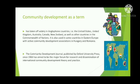As a term, community development has taken off widely in Anglophone countries like the U.S., United Kingdom, Australia, Canada, and New Zealand, as well as other countries in the Commonwealth of Nations. It is also used in some countries in Eastern Europe, with active community development associations in Hungary and Romania. The Community Development Journal, published by Oxford University Press since 1966, has aimed to be the major forum for research and dissemination of international community development theory and practice.